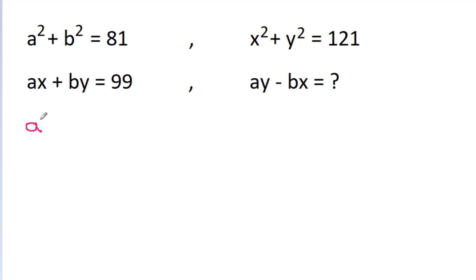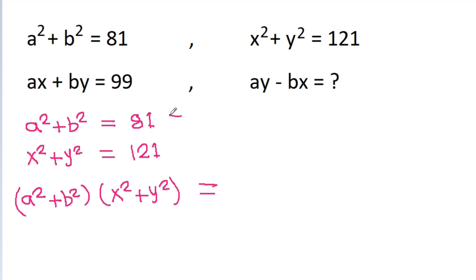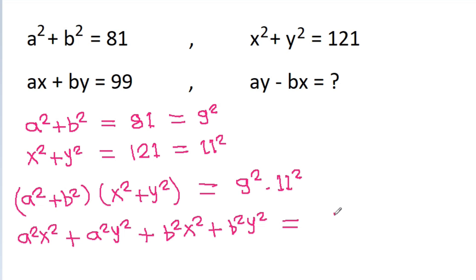We have a squared plus b squared equal to 81 and x squared plus y squared equal to 121. If we multiply both equations, we get (a² + b²)(x² + y²) = 81 × 121, which is 9² × 11². Expanding the left side gives a²x² + a²y² + b²x² + b²y², and the right side equals 99 squared. Call this equation 1.